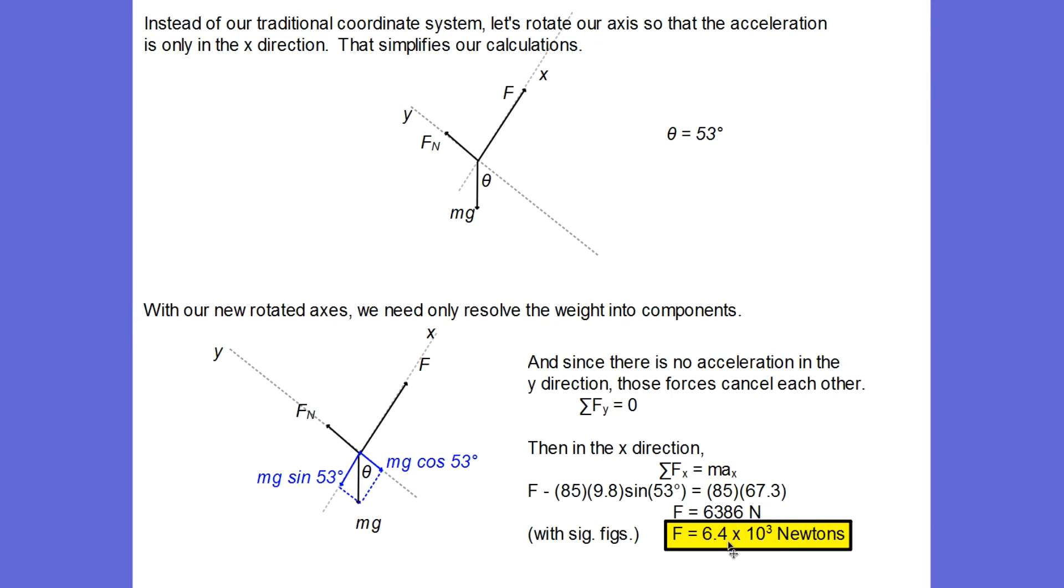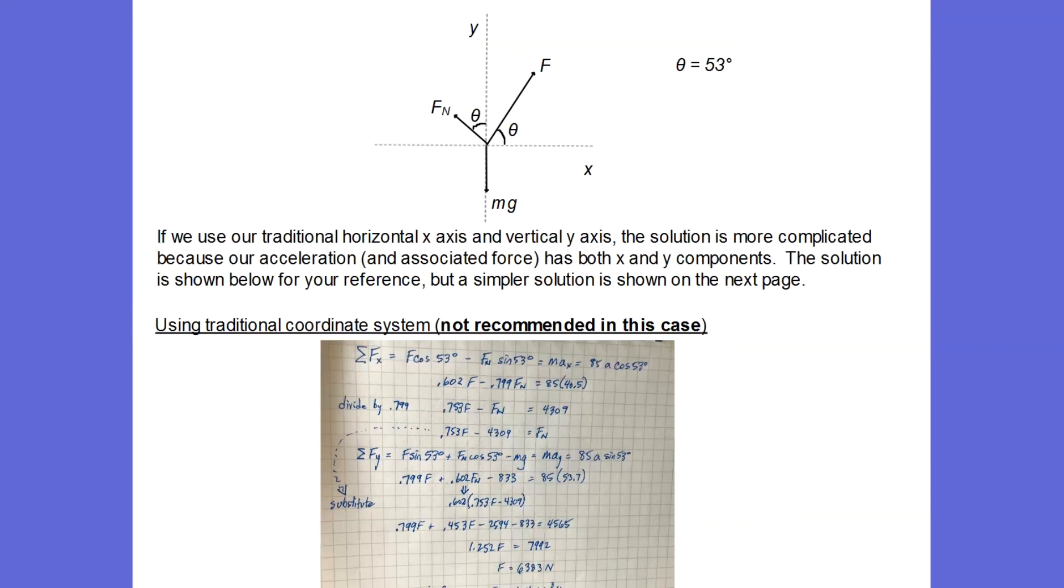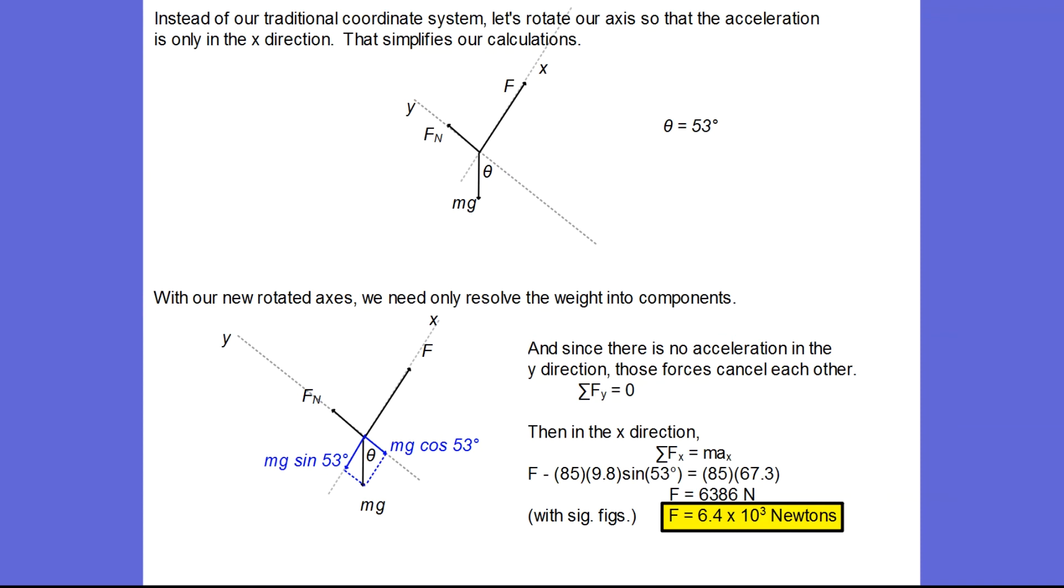6.4 times 10 to the third newtons. When I take into account, there are only two significant figures in this problem. And you can see this is certainly much simpler than all this work here if we had stuck with our traditional coordinate system. So that is going to be a common strategy is to rotate our coordinate system so that the x direction is the direction of motion and acceleration.